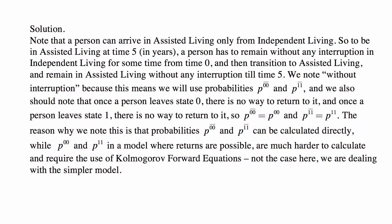So to be in assisted living at time five in years, a person has to remain without any interruption in independent living for some time from time zero and then transition to assisted living and remain in assisted living without any interruption until time five.